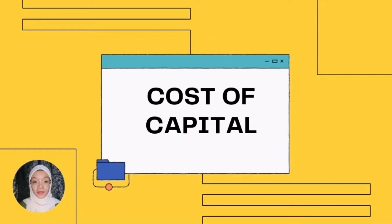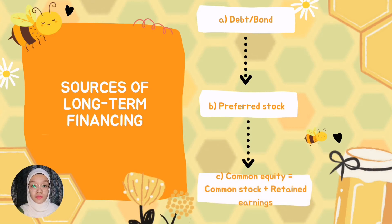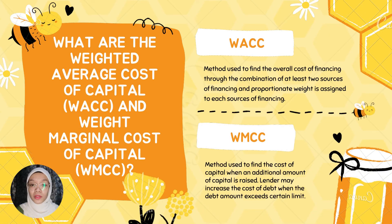Hi, Assalamualaikum. My name is Noosh Hazza Amira Binti Ahmed Suhaimi. Today I will explain about chapter 5 in financial analysis, which is cost of capital. Next is sources of long-term financing. Sources of long-term financing have three: debt, preferred stock, and lastly common equity, which equals common stock plus retained earnings.